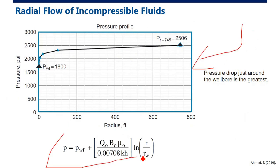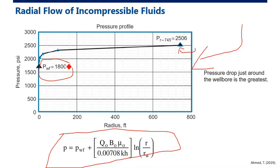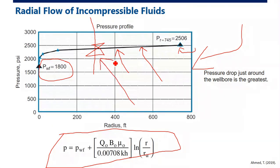Using the pressure profile equation: if I know the pressure at the reservoir boundary and the flowing bottom-hole pressure (say 1800 psi), I can estimate the pressure at any intermediate point or even at a second well location. I can use this formula to estimate the pressure profile and create a pressure plot — analytically or using a numerical simulator.